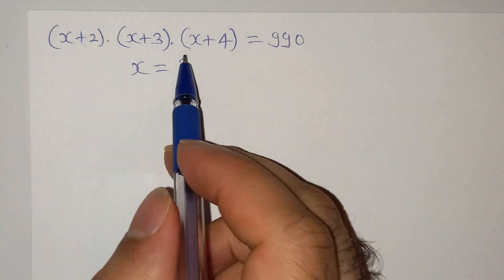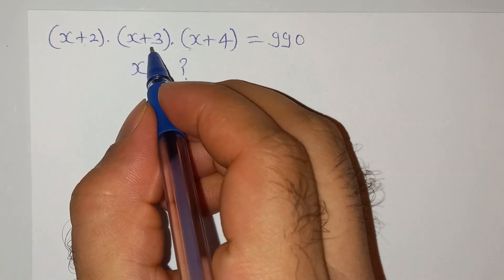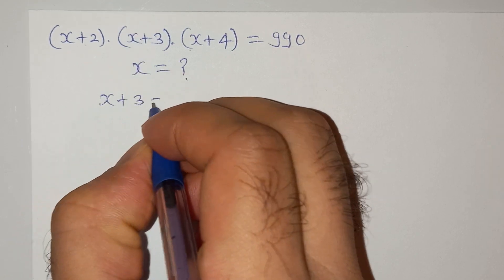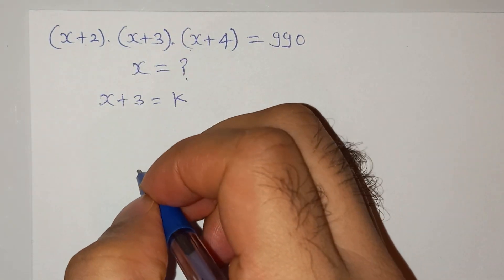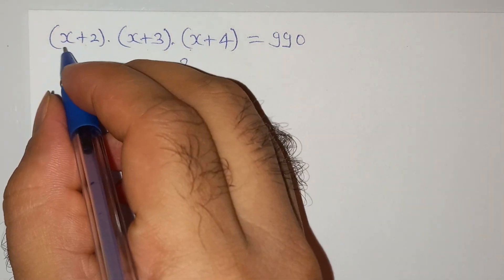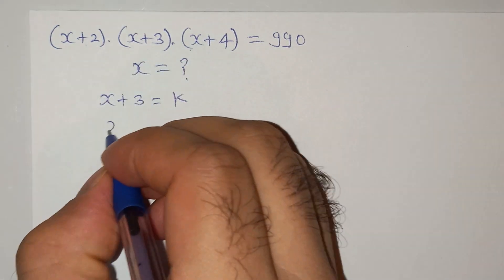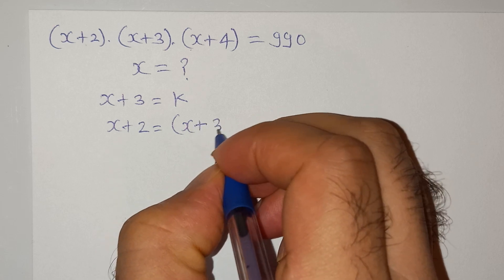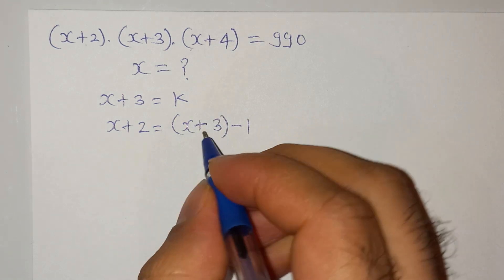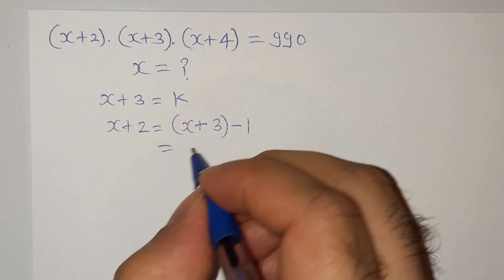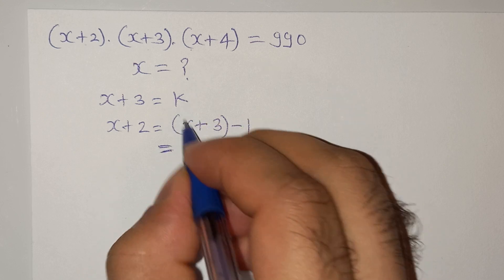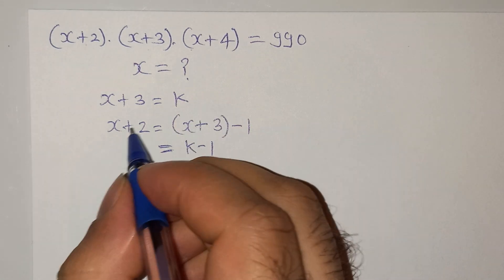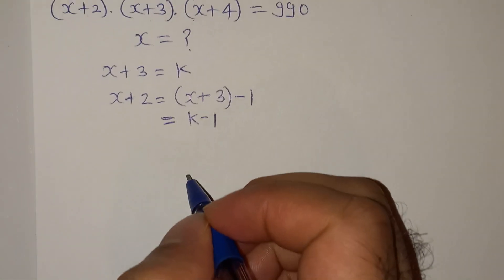To solve this question, I'm going to assume the middle term x+3 equals to k. So I can write x+2 as x+3 minus 1, and since x+3 is k, that gives us k minus 1. So x+2 is k minus 1.